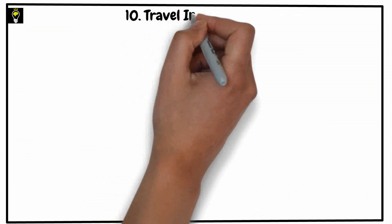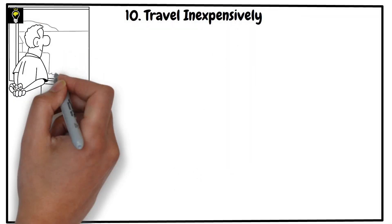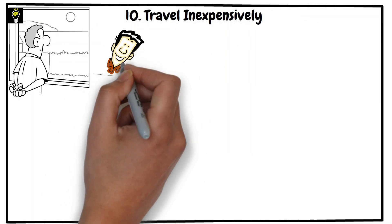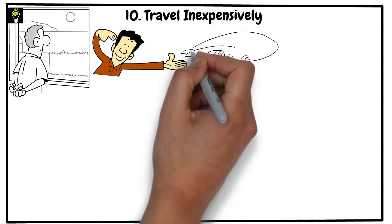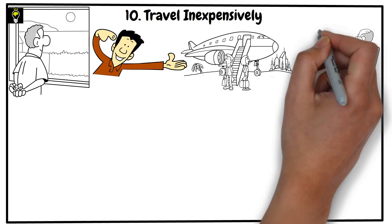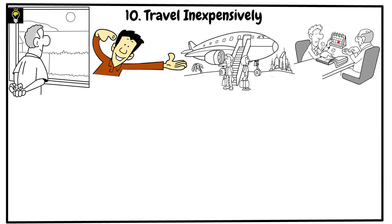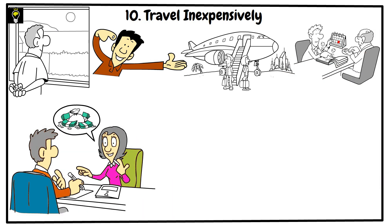Travel inexpensively. When traveling on a budget, there are a few things you can do to keep your costs down. One of the best ways to do this is to plan your trip in advance, and be flexible with your travel dates. This will allow you to take advantage of lower airfare rates.